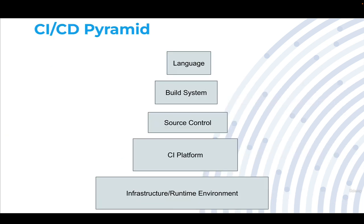I like to think of CI and CD in terms of a pyramid when it comes to the infrastructure. At the very bottom, you have your infrastructure and underlying runtime environment, which is responsible for hosting your CI platform. Your CI platform is where your jobs or pipelines run — something like Jenkins, TeamCity, or GitHub Actions. Above that, you have a source control system, which is where your code lives.